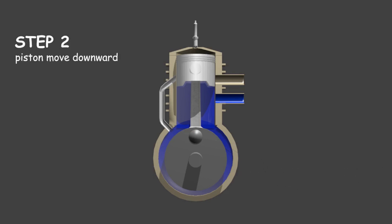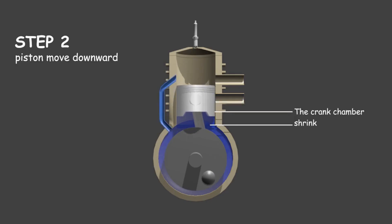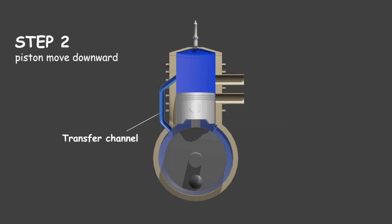The second step is when the piston moves down. The movement of the piston makes the crank chamber shrink, so that the air-fuel mixture in the crank chamber is pushed into the combustion chamber through the transfer channel.